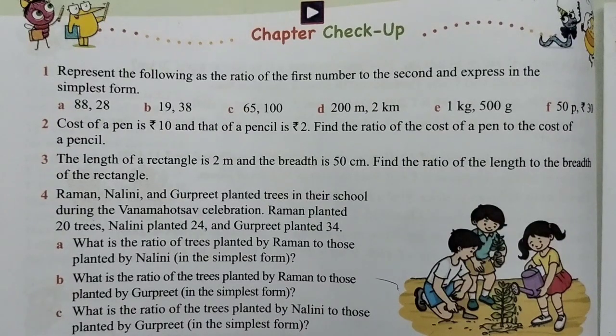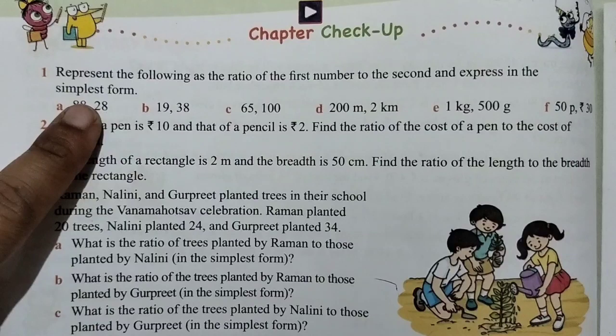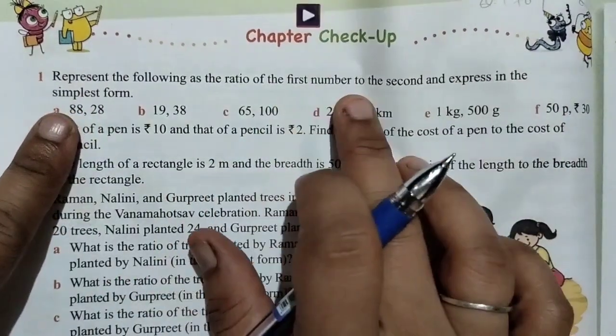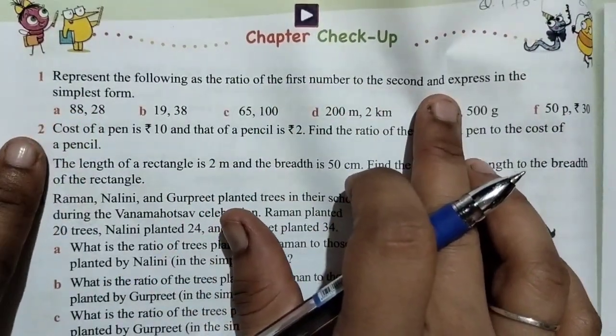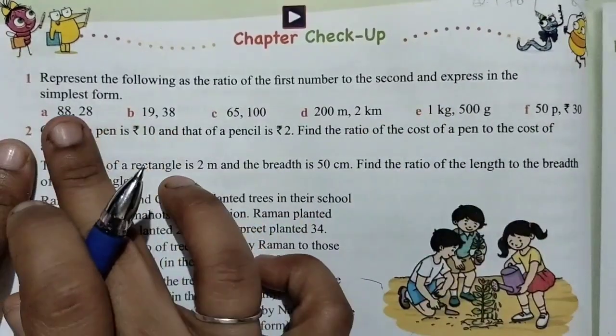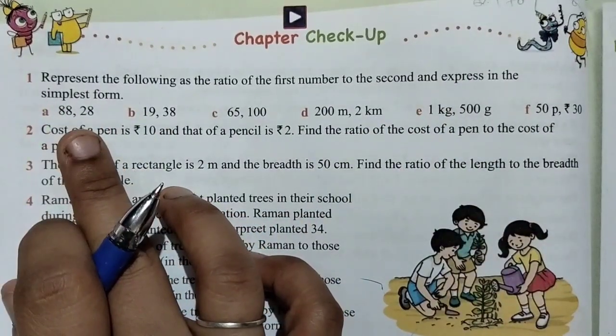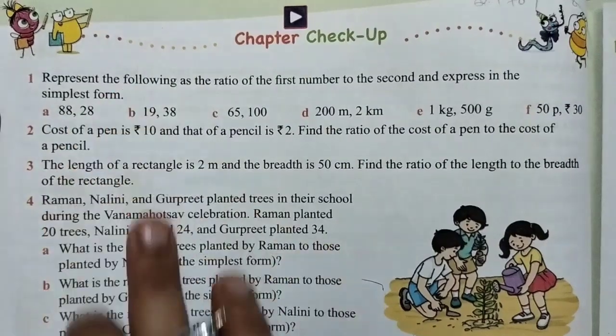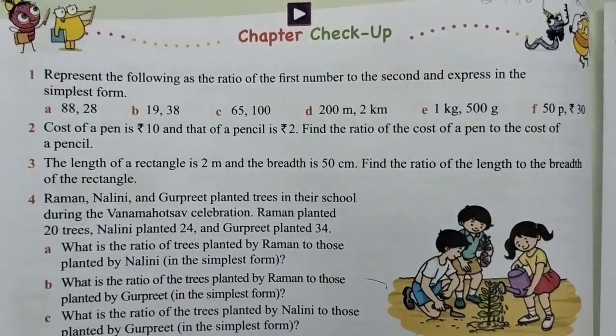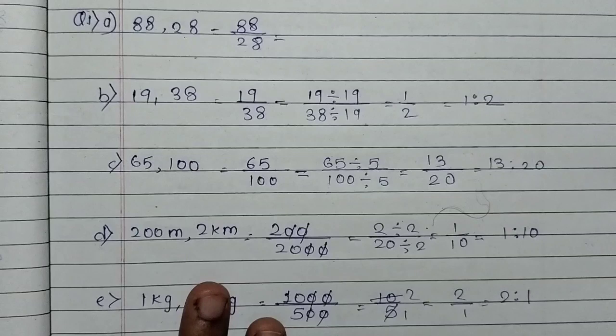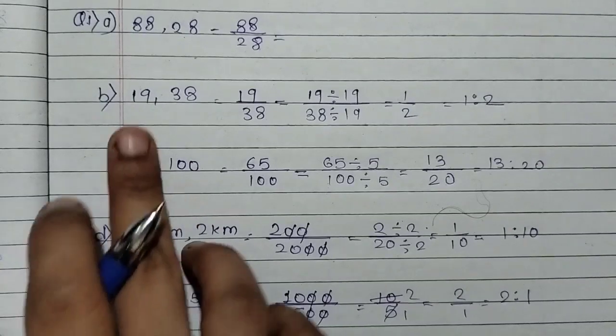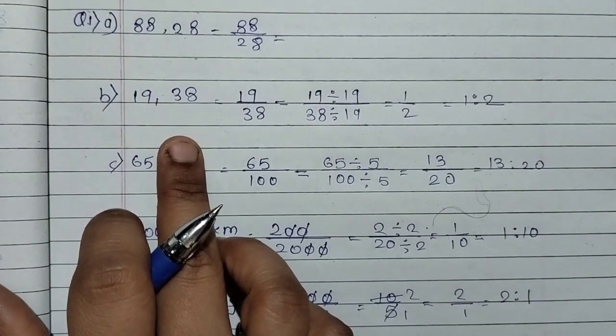So let's start. In this video, we will solve question number 1 to 7. Question number 1: represent the following as the ratio of the first number to the second number and express in the simplest form. Here we will show it in ratio form, but in the simplest form, meaning the lowest form. So we will do all the examples in the notebook. What do we do in simplest form? We divide those two numbers by common factors.